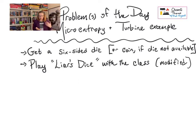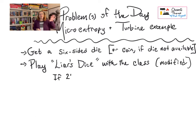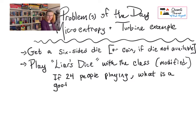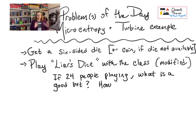Liar's Dice usually starts with five dice for everyone in the group. But for purposes of this illustration, let's say every single person in our class has one die. That means, including me, we'd have around 24 people rolling dice. So each of these 24 people are going to roll one six-sided die. You roll your die and you have a number — and in Liar's Dice, you keep the number you roll secret from everybody.